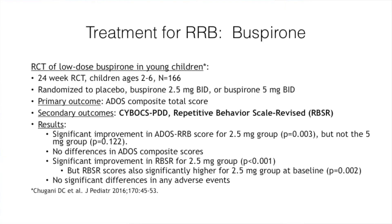Coming back to Buspar — this was a fairly large RCT that went for 24 weeks in young kids, two to six year olds, about 166 children. They randomized to either 2.5 BID, 5 BID, or placebo, primarily looking at the ADOS. Secondary outcomes included the RBS-R and the obsessive compulsive scale modified for PDD. They did see improvement in repetitive behaviors in the lower dosing group but not the higher dosing group, and did not find differences in overall autism symptoms on the ADOS. There were no differences in adverse events.